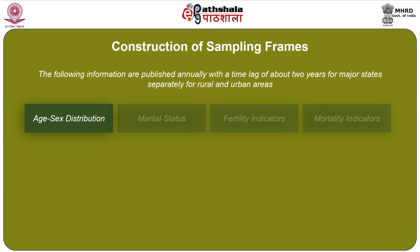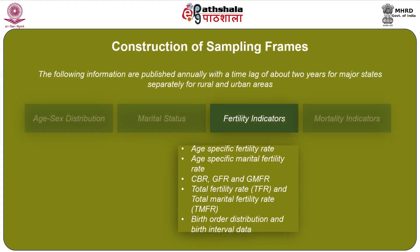The following information is published annually with a time lag of about two years for major states, separately for rural and urban areas: (1) age-sex distribution; (2) marital status; (3) fertility indicators including age-specific fertility rate, age-specific marital fertility rate, crude birth rate (CBR), general fertility rate (GFR), general marital fertility rate (GMFR), total fertility rate, total marital fertility rate, birth order distribution and birth interval data.